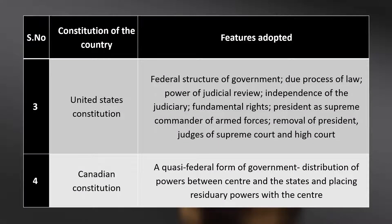From the United States constitution, the features adopted include the federal structure of government — the division of power between union and state — the due process of law, power of judicial review, independence of judiciary, fundamental rights, president as supreme commander of armed forces, removal of president, and provisions relating to judges of the supreme court and high courts.